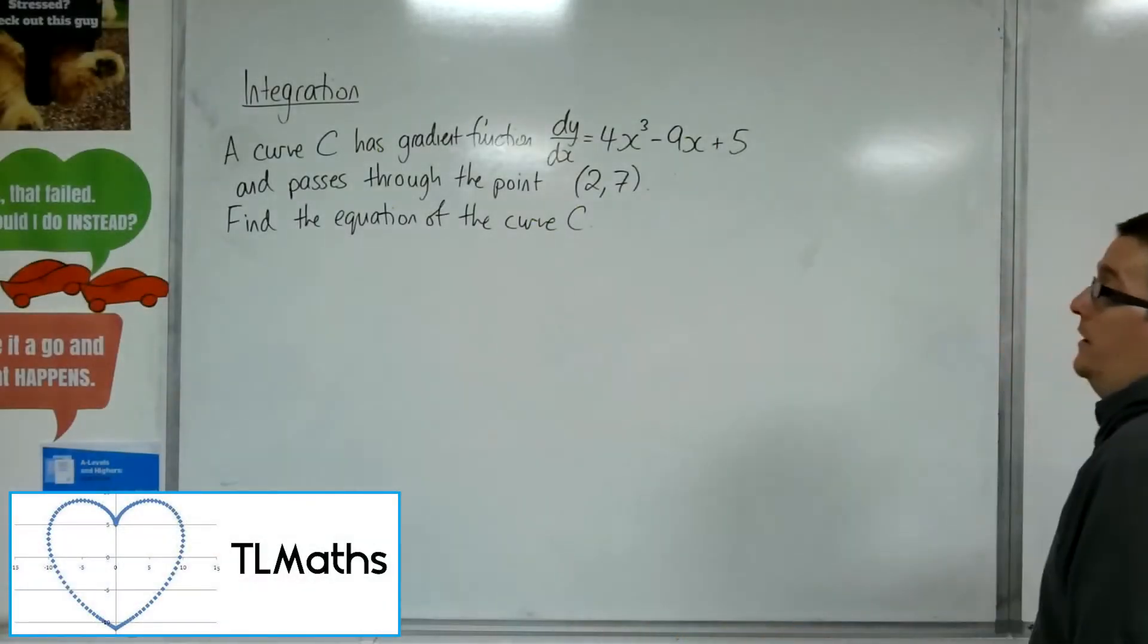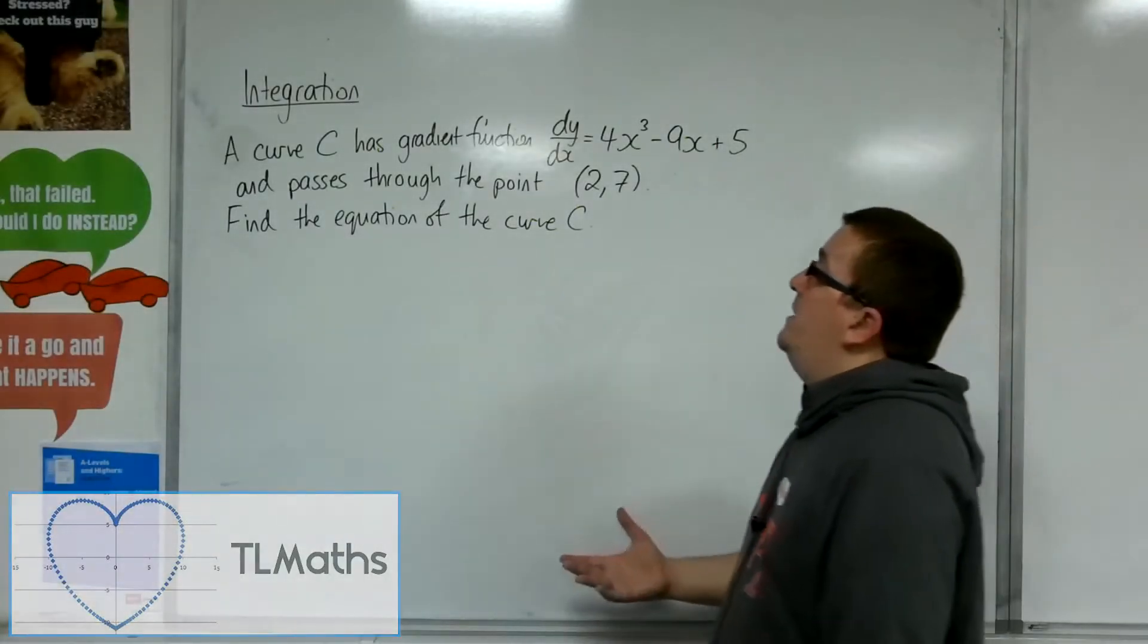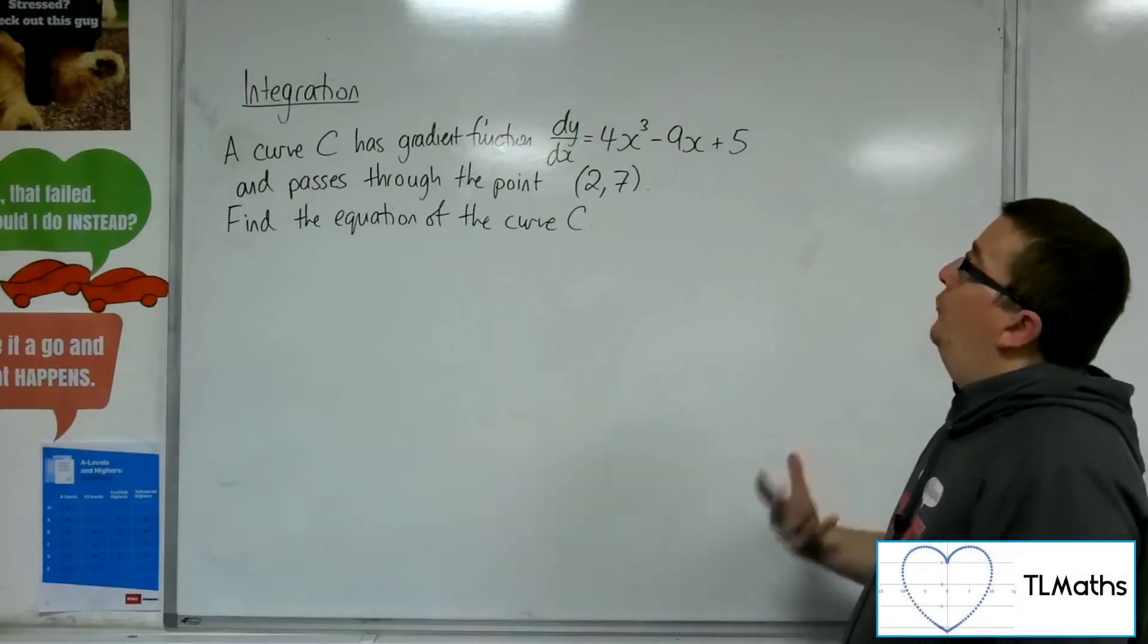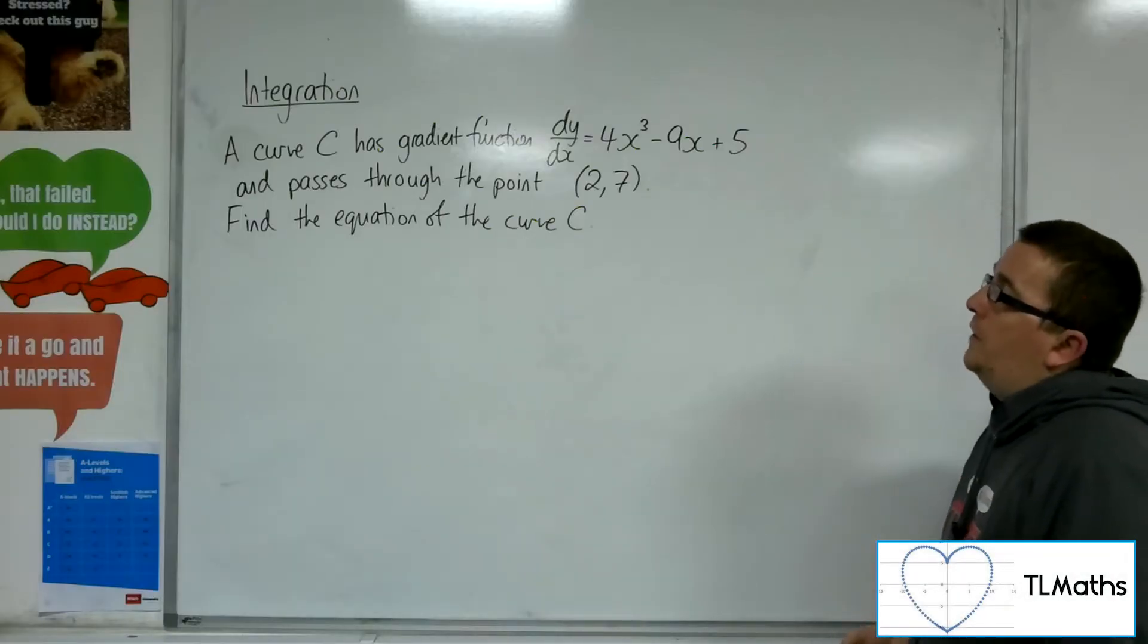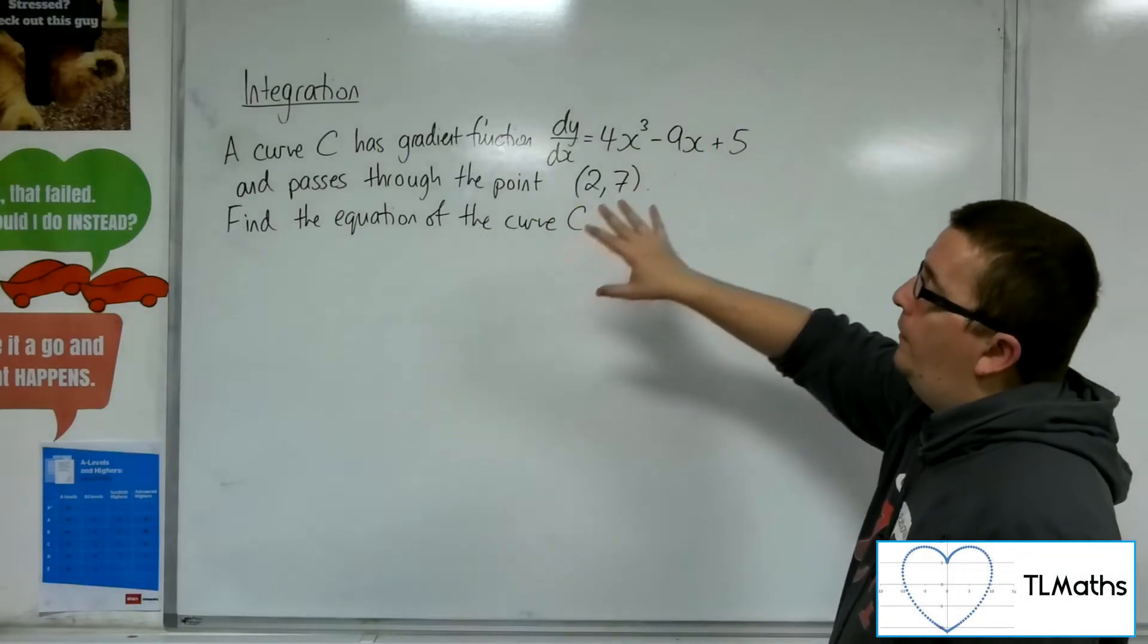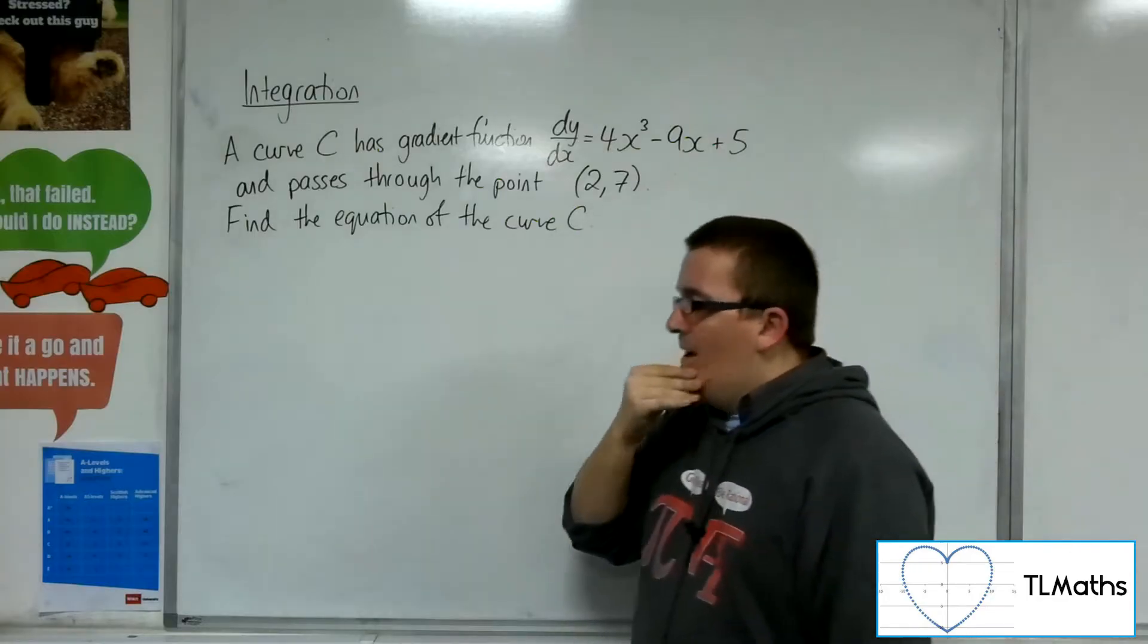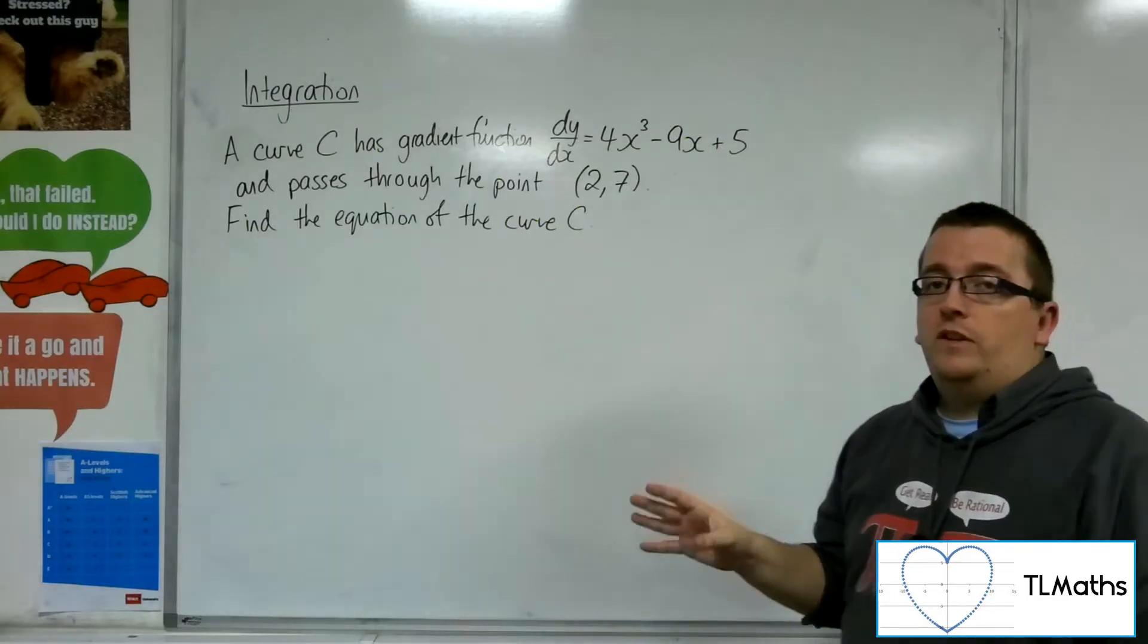Okay, so in this problem we have a curve C with a gradient function of dy/dx equals 4x³ minus 9x plus 5. And we know that the curve passes through the point (2,7). We're asked to find the equation of the curve C.